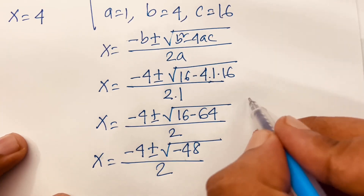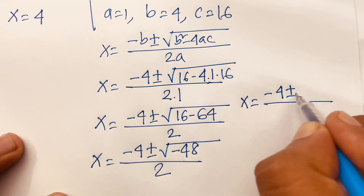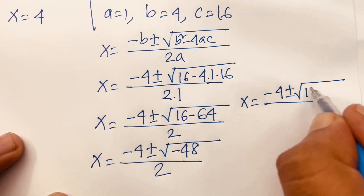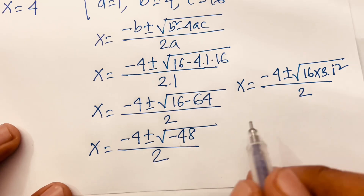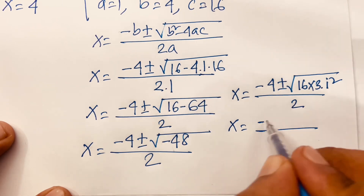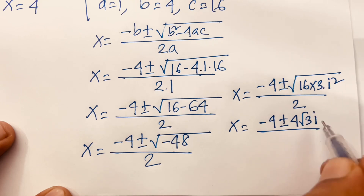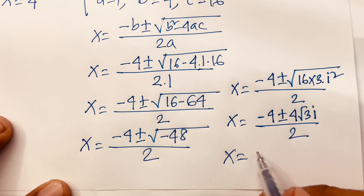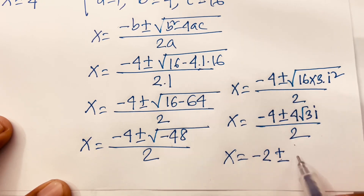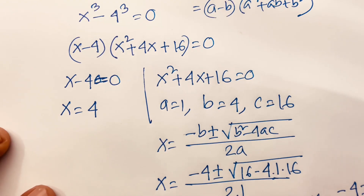We write minus 48 as 16 times 3 times i squared. So x equals minus 4 plus or minus 4 root 3 i, all over 2. Simplifying, x equals minus 2 plus or minus 2 root 3 i. Therefore our final answers are x equals 4, and x equals minus 2 plus or minus 2 square root 3 i.